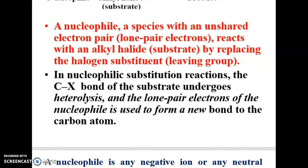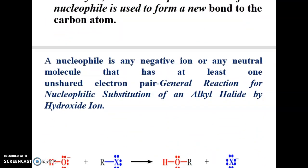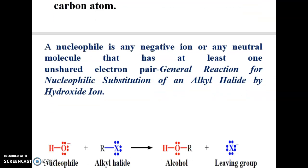In nucleophilic substitution reactions, the C–X bond of the substrate undergoes heterolysis and the lone pair of electrons of the nucleophile is used to form a new bond to the carbon. A nucleophile is any negative ion or any neutral molecule that has at least one unshared electron pair.